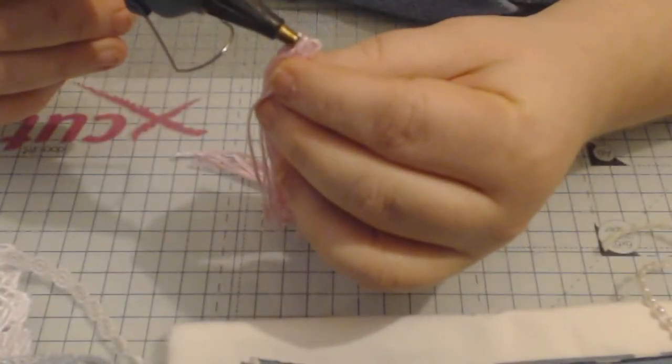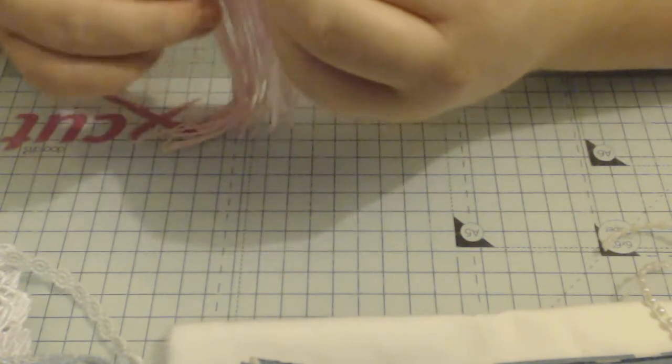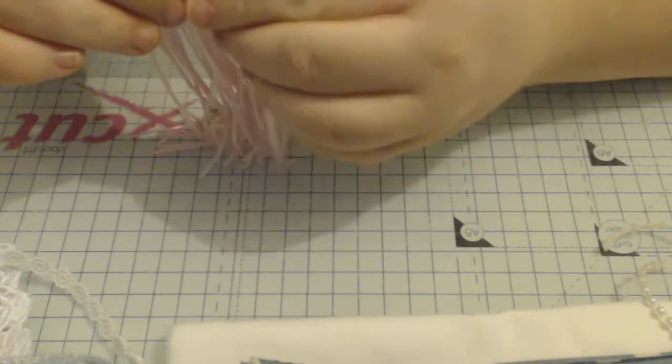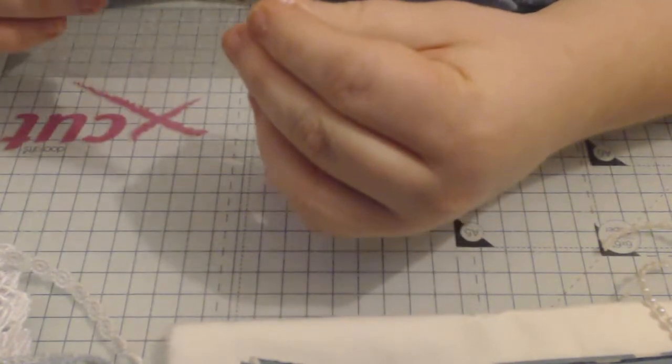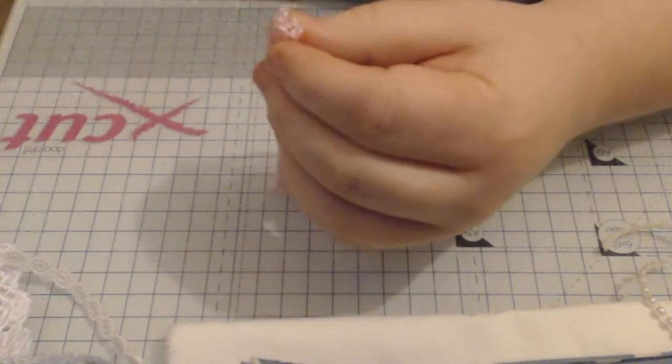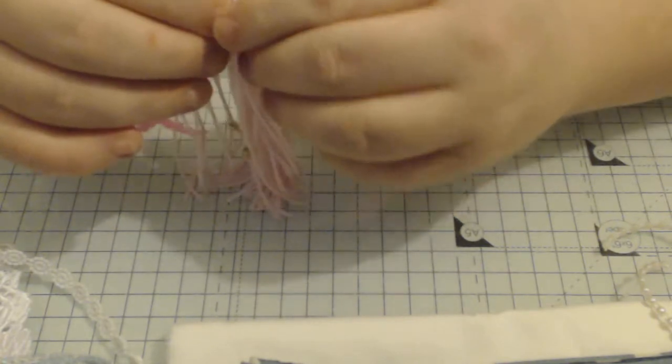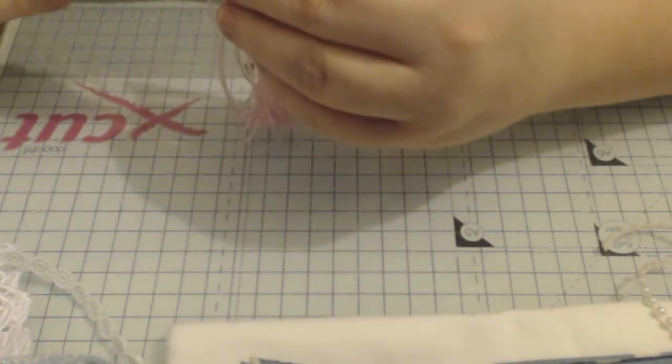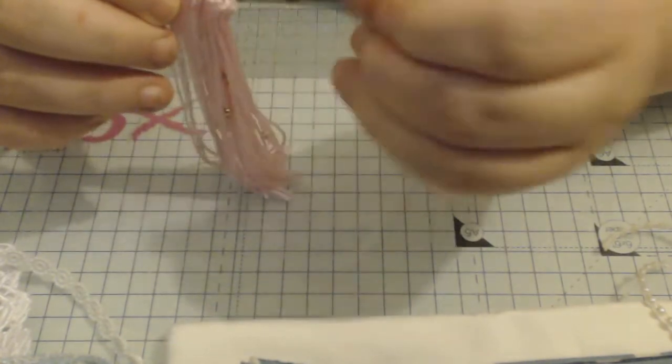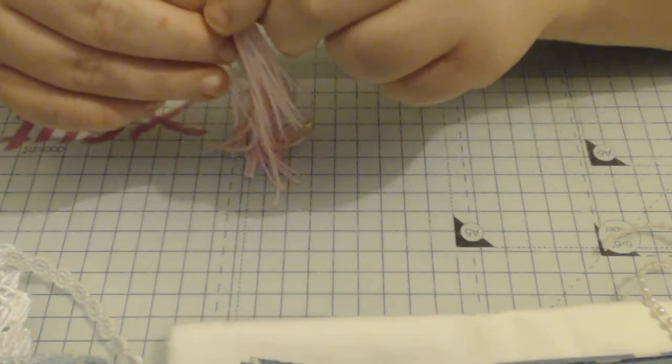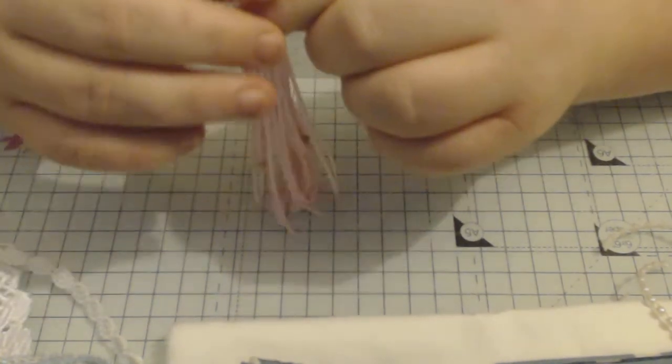And that's all you're doing is just rolling it. Add another bit of hot glue and just wrap your trim on. Another bit of hot glue, wrap your trim on, and then lastly your last little bit, wrap it on.